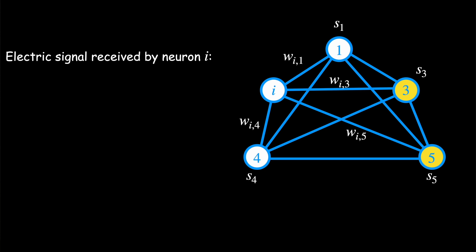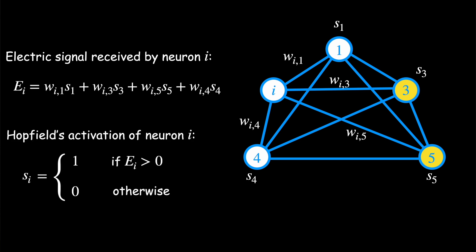Remember that each neuron i receives energy from the other neurons and in Hopfield's network, neuron i is activated if it receives a positive amount of energy. In Hinton's network, neuron i is activated randomly with this probability.